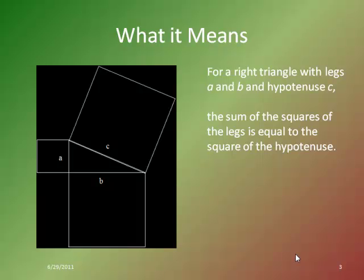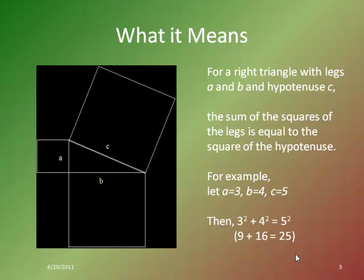The Pythagorean Theorem simply says that if I take a right triangle with legs A and B and a hypotenuse C, and I draw a square on each of those sides, the squares drawn on the legs would add up to the square on the hypotenuse. So if A and B are 3 and 4, and our hypotenuse is 5, then squaring 3 and 4 gives 9 and 16, which adds up to 25.